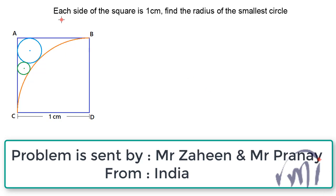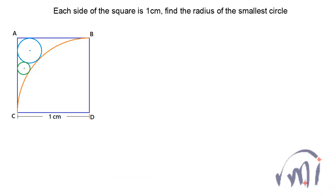Here is a problem which was sent by Mr. Zaheen and also by Mr. Pranayv from India. In this problem we have a square where each side is one centimeter, and we have to find the radius of the smallest circle.